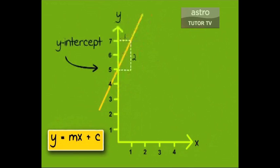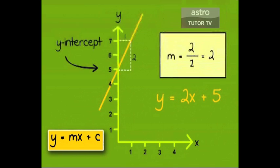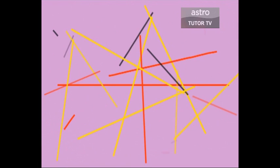Example: if gradient is 2, y-intercept is 5, so the formula will be y equals 2x plus 5. Now you know how to find the equation for a perfect straight line.